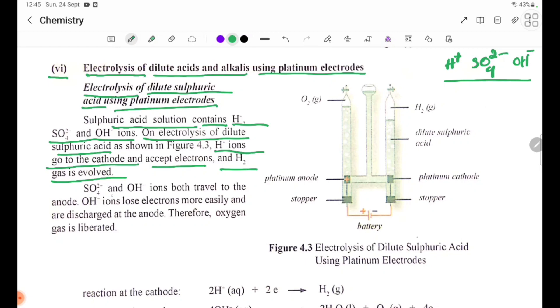SO4 2 minus and OH minus ions both travel to the anode. OH minus ions lose electrons more easily and are discharged at the anode. Therefore, oxygen gas is liberated.